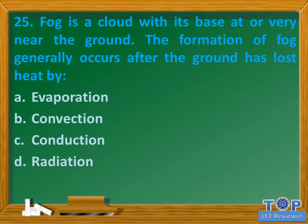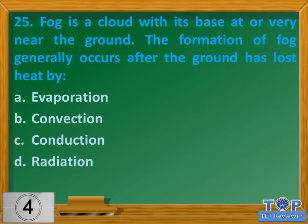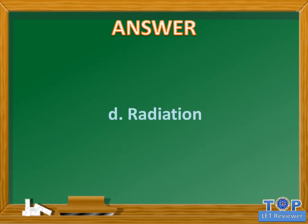Question number 25. Fog is a cloud with its base at or very near the ground. The formation of fog generally occurs after the ground has lost heat by: A. Evaporation. B. Convection. C. Conduction. D. Radiation. Answer: D. Radiation.